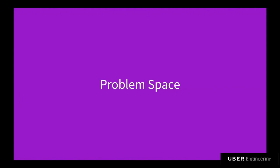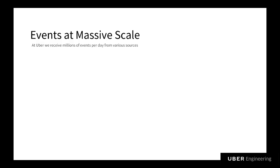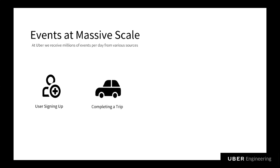So what problems are we trying to solve? As you can imagine, events at Uber are at a massive scale. These can range from a user signing up to someone completing a trip, rating a trip, or a driver coming online or offline. At any point in time, there are thousands of event types taking place. At Uber, there are multiple services and platforms that process these events at a massive scale.